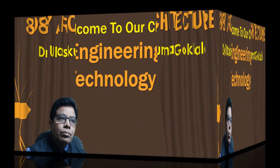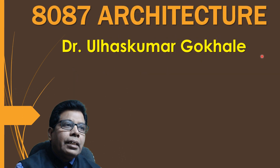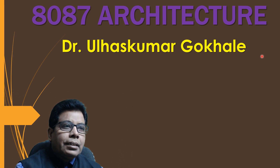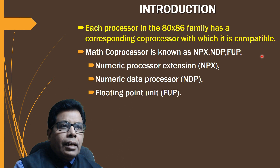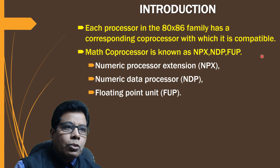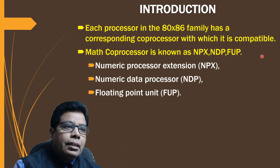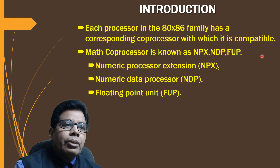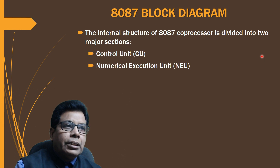Welcome to our channel Engineering and Technology for You. The topic for today is 8087 architecture. Each processor in the x86 family has a corresponding co-processor with which it is compatible. The math co-processor is also known as NPX, NDP, or FPU — that is, numeric processor extension, numeric data processor, or floating point unit.